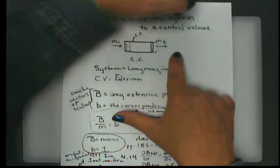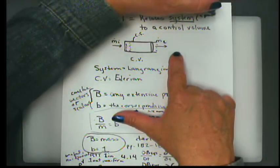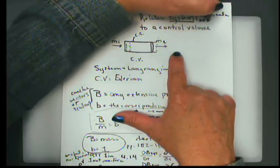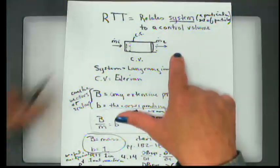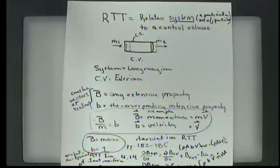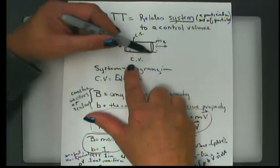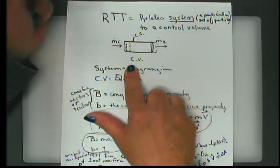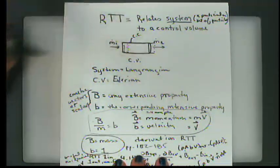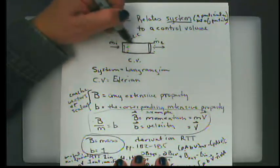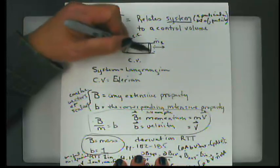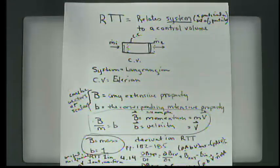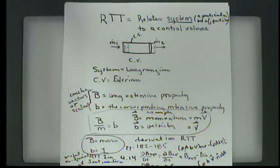When I say a system, what I am talking about is a particular set of particles — not just the same amount of mass, but a particular slug of mass. In the diagram here, I've drawn a piece of pipe, which is the control volume, and the edges or the boundaries are the control surface — the edges of the pipe and the entrance and the exit of the section we're looking at, as we have a mass flow rate in and a mass flow rate out.